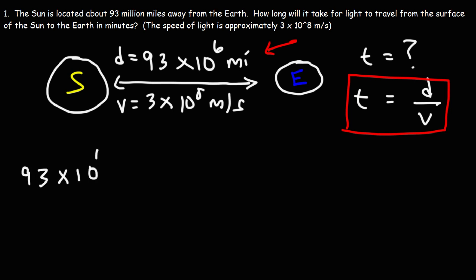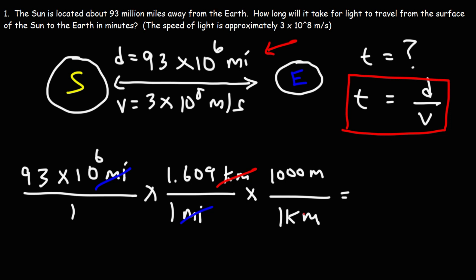So let's go ahead and do that. We have 93 times 10 to the 6 miles. One mile is 1.609 kilometers and 1 kilometer equals 1,000 meters. Setting it up this way, the unit miles will cancel and the unit kilometers will cancel. So it's going to be 93 times 10 to the 6 multiplied by 1.609 times 1,000.